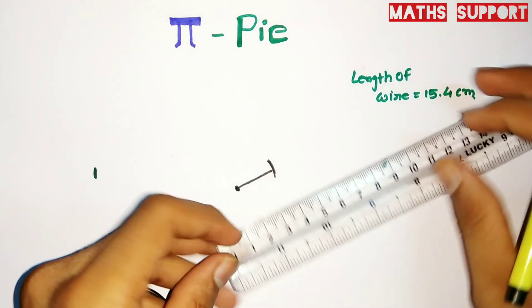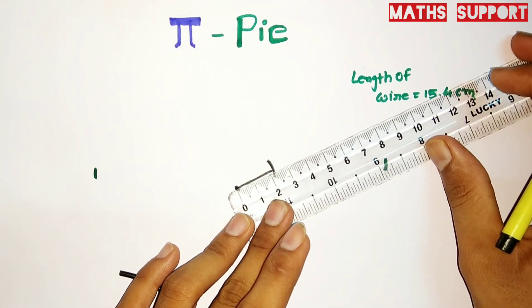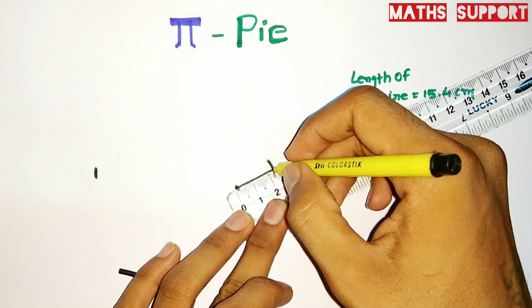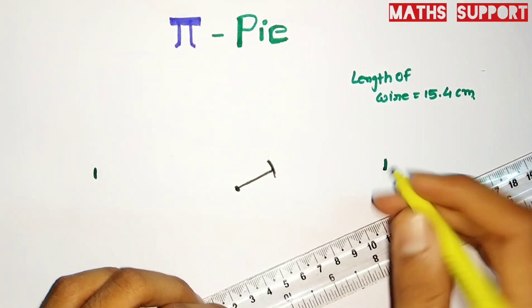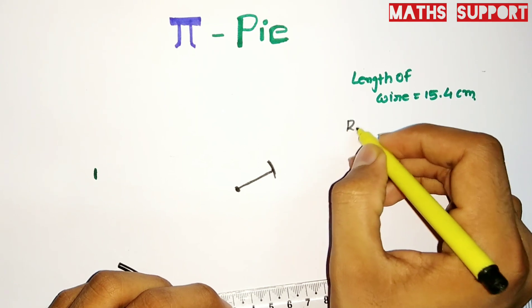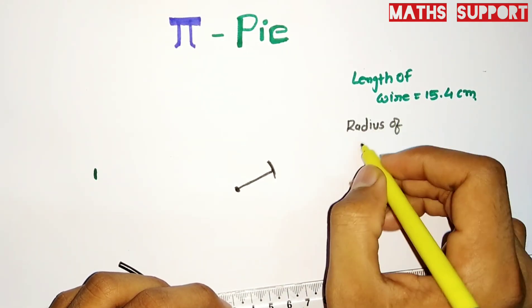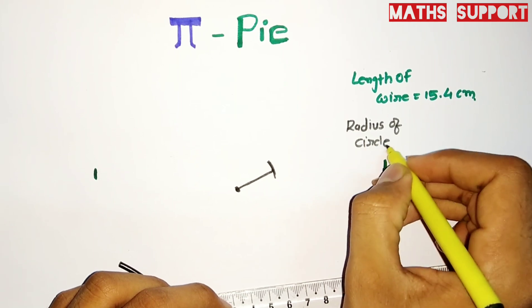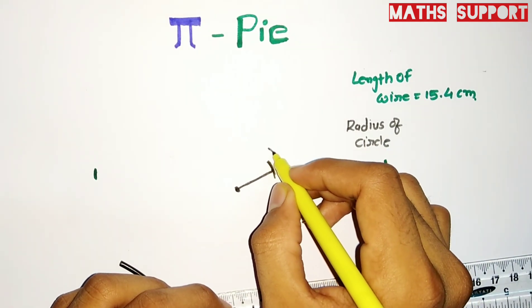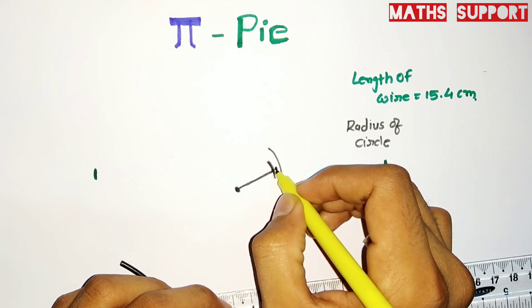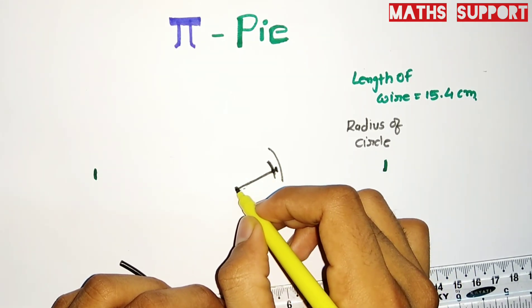Now if I'm measuring this radius, I'm getting it somewhere 2.4 something, 2.45. My wire was somewhat thick, so I need to take somewhat more distance than the actual inner radius.